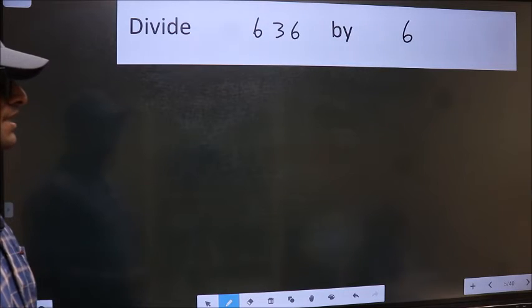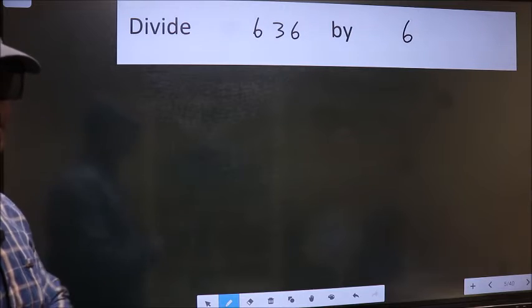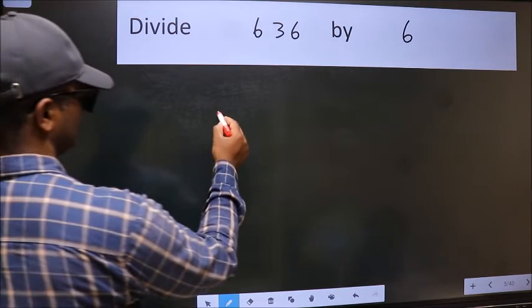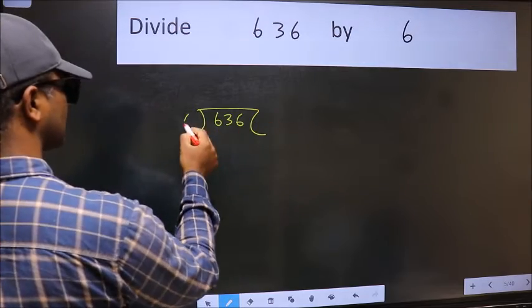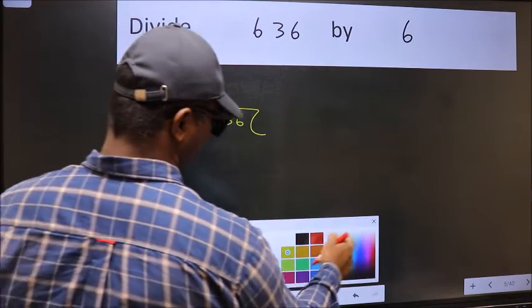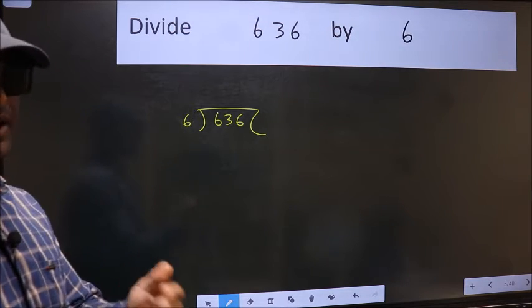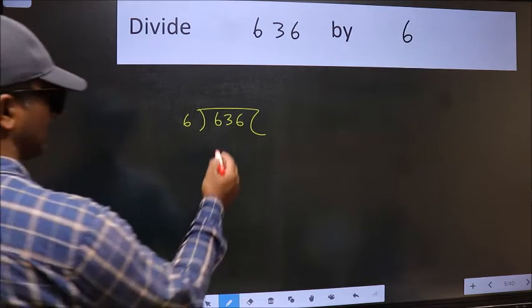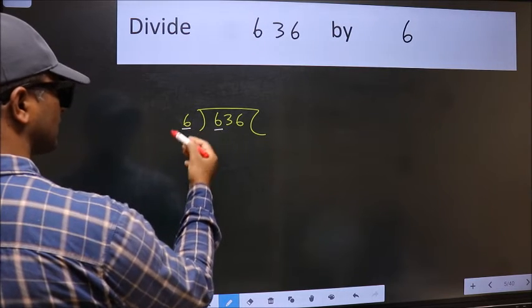Divide 636 by 6. To do this division, we should frame it in this way: 636 here and 6 here. This is your step one. Next, here we have 6 and 6 here. When do we get 6 in the 6 table? Six ones are six.